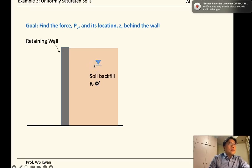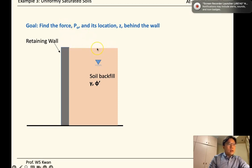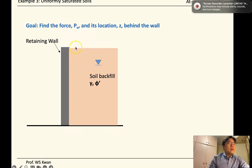Let's do an example here — a retaining wall designed for partially saturated soils, which means we have a groundwater table located between the top grade level and the base of the retaining wall. We want to find the resulting force from the soils and water behind our structure.